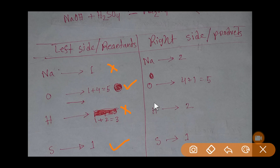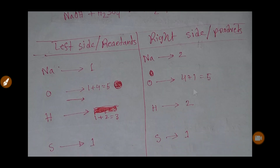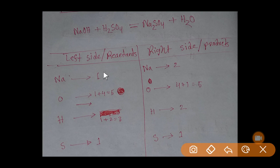To balance this reaction, we will first target sodium. To balance sodium, we multiply the sodium hydroxide by two — that is, we place a coefficient of two here. This means we need to update the number of oxygen and hydrogen accordingly.